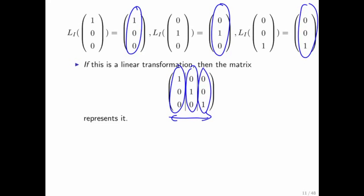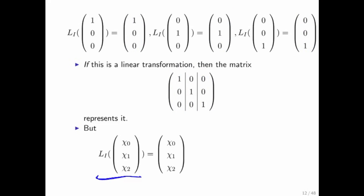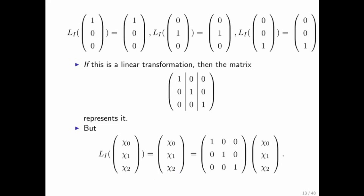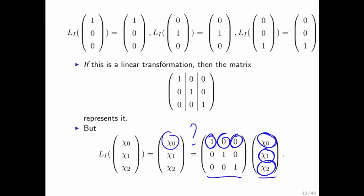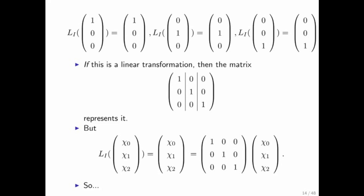So now we need to answer the question: does this matrix indeed represent it? What happens to a vector when you apply the identity function is that you get that same vector back. The question is whether that is the same as when you multiply this matrix times that vector. The first entry equals 1 times chi zero, the second component equals the corresponding entry, and the third component as well. So yes, this matrix represents that vector function, and therefore that vector function is a linear transformation.